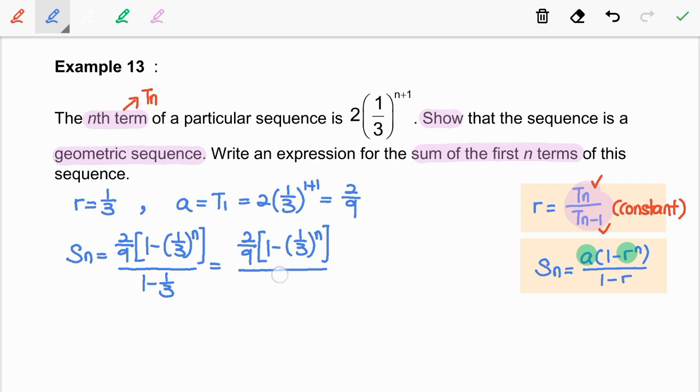So, 1 minus 1 over 3 is 2 over 3. Simplify it again. So, we have 1 over 3 times 1 minus 1 over 3 to the power of n. So, this is the expression for the sum of the first n terms.